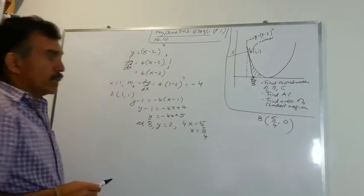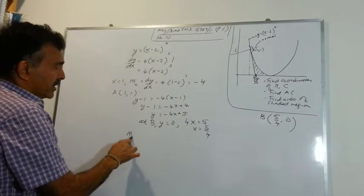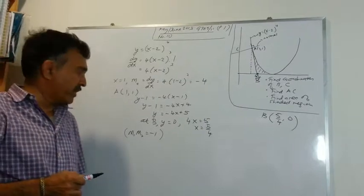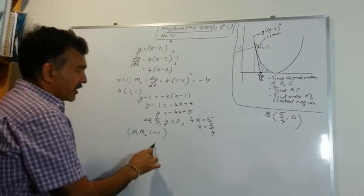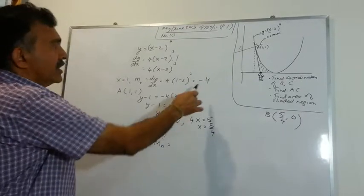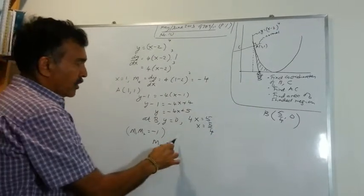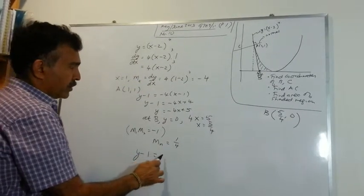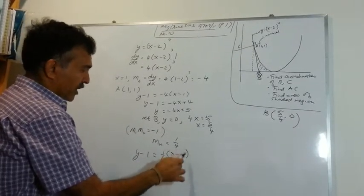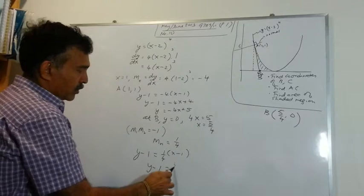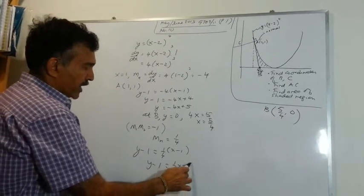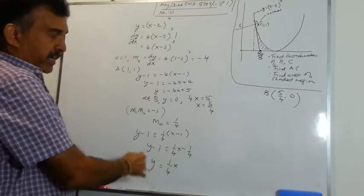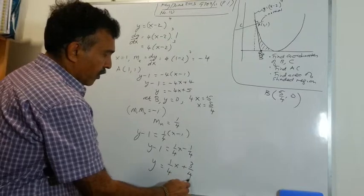Now let's take care of the normal. We use the idea that m1 times m2 equals negative 1 for perpendicular lines — the product of the gradients is negative 1. Since the gradient of the tangent is negative 4, the gradient of the normal is 1 over 4. So the equation of the normal is y minus 1 equals (1/4)(x minus 1), which gives y equals (1/4)x plus 3/4.